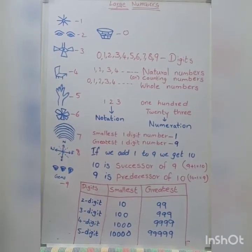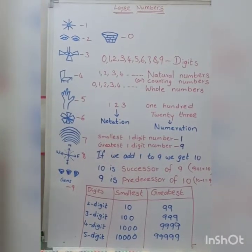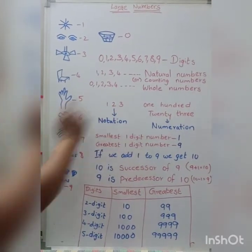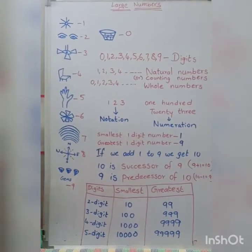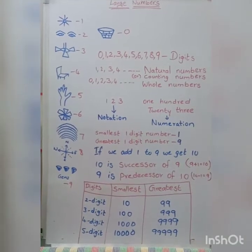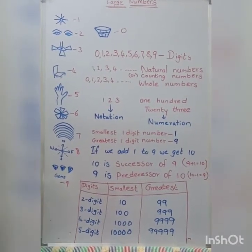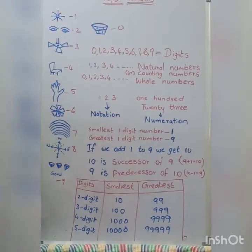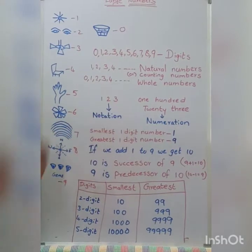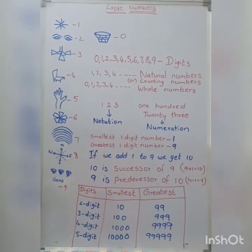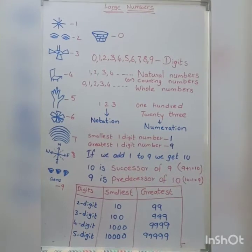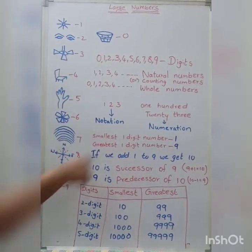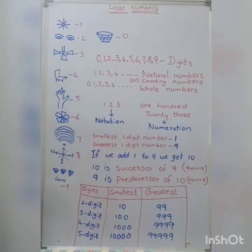We can write a number in two ways. The given number is 123. We can write it using digits and we can write it using words. Writing a number using digits is called notation — here we wrote 123 with digits 1, 2, 3. Writing a number in words is called numeration.